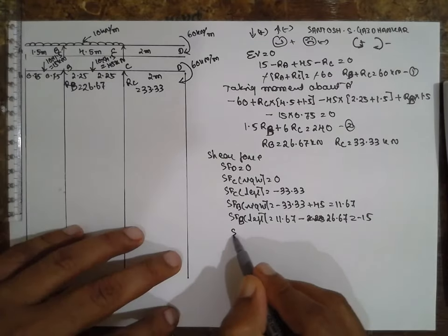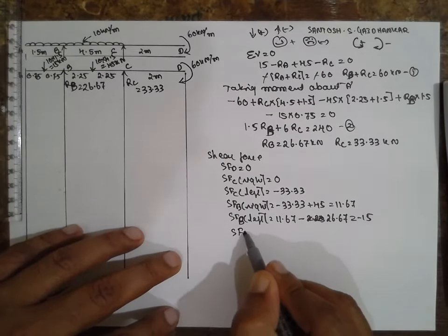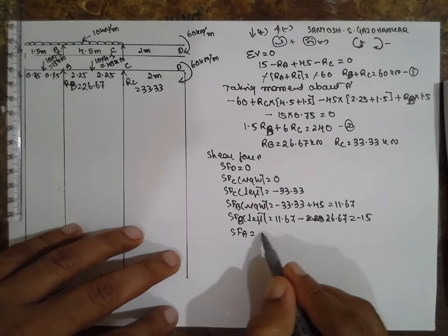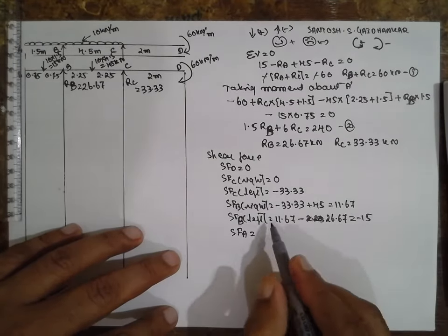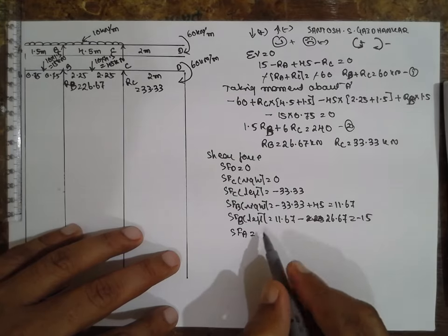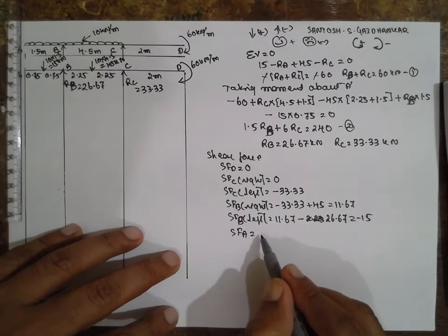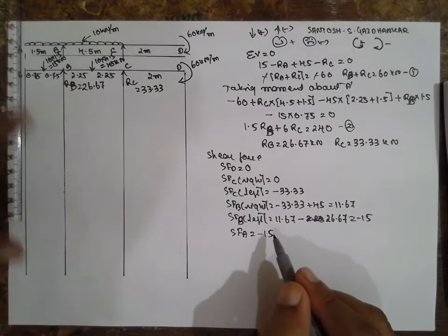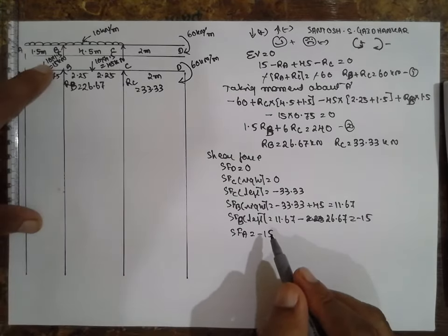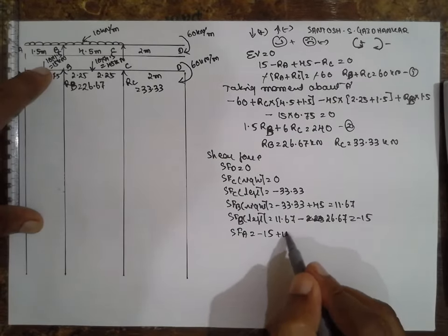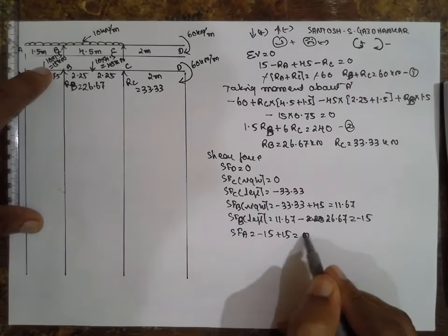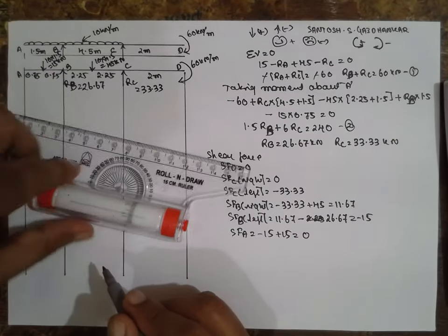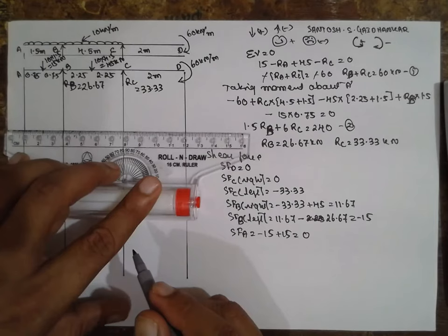SF at A — there is no load, so it is the previous value: 15. But there is one more load acting here, plus 15, so it is nothing but zero. This closes the shear force diagram.